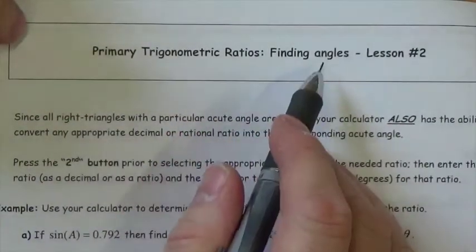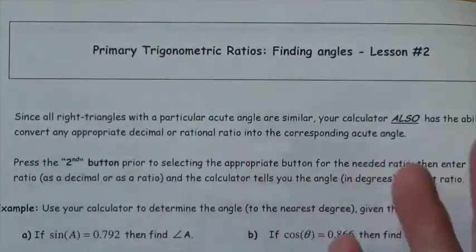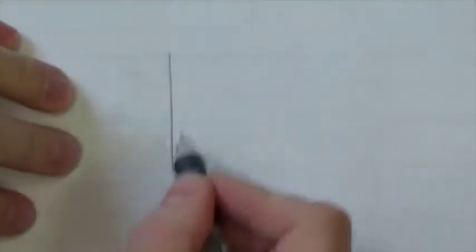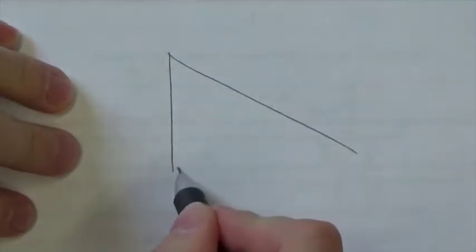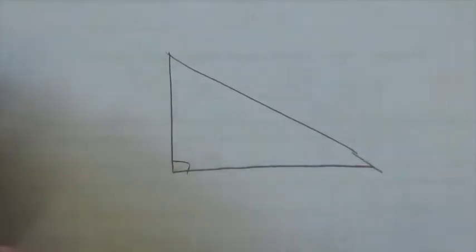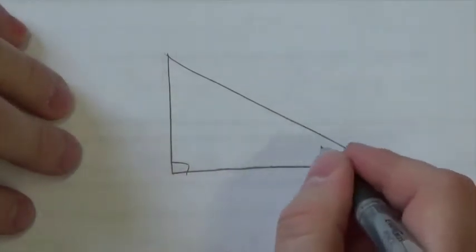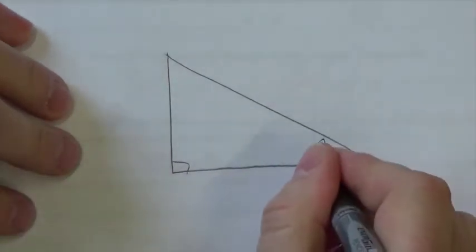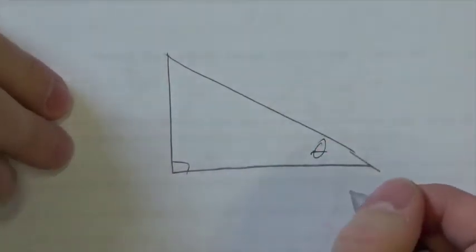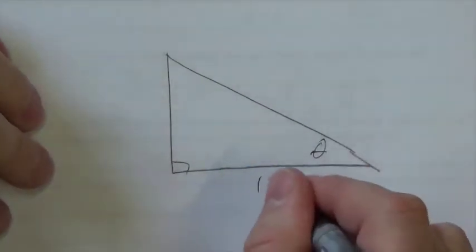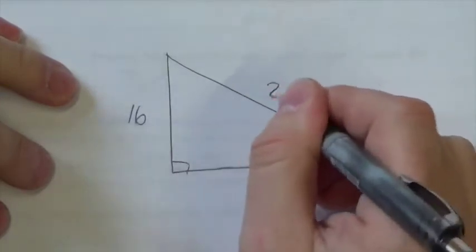Trigonometry can also be used to find angles if you don't know them. For example, let's say I draw a triangle here. Here's my angle theta, and I'm interested in knowing what that angle is. Let's say that I happen to know that the sides here are 12, 16, and 20.